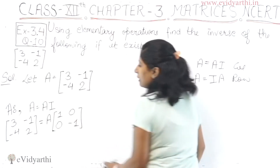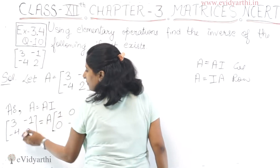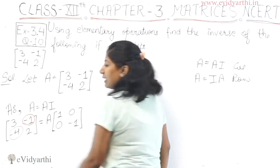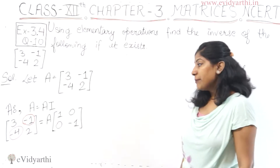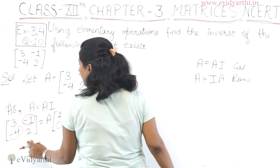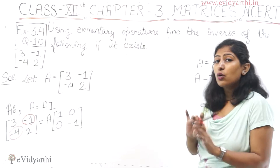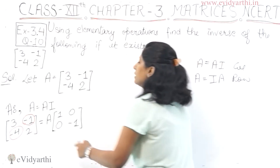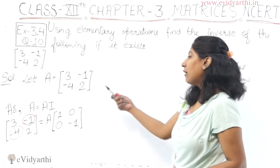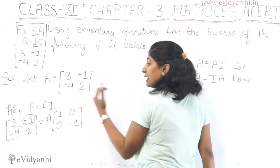Our goal is that our diagonal entries become 1 and off-diagonal entries become 0. So we focus first on making the -1 entry become 0. We are going to use column operations — not row — to achieve this.